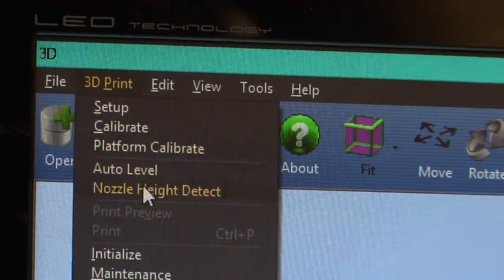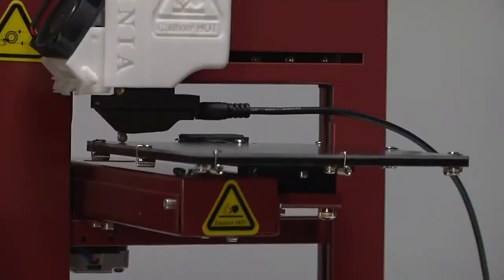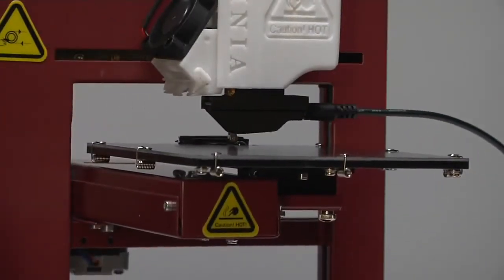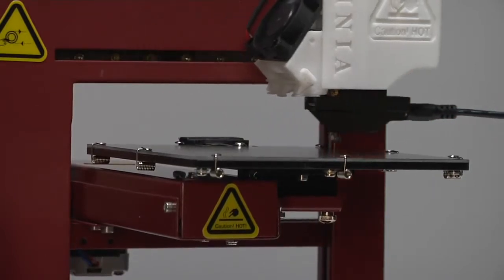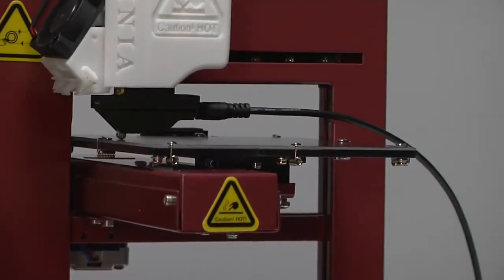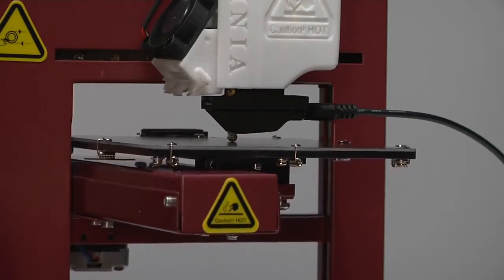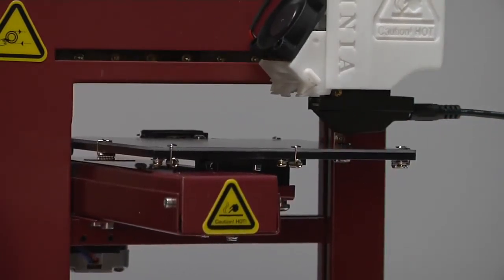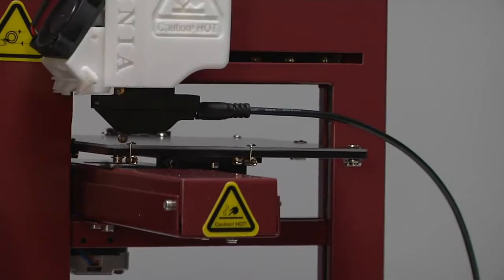Select Auto-level from the 3D print menu. The printer will raise the build platform and position the calibration probe over nine locations on the build platform while it measures the height. You will hear a faint click as it successfully measures each location. This process will take about 2 minutes 15 seconds.